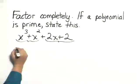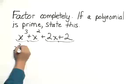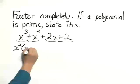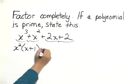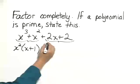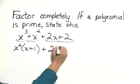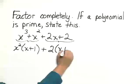We can factor out an x squared out of the first two terms. That gives us x squared times x plus 1. Then we write the plus sign. And we can factor a 2 out of the second pair of terms. It gives us 2 times x plus 1.